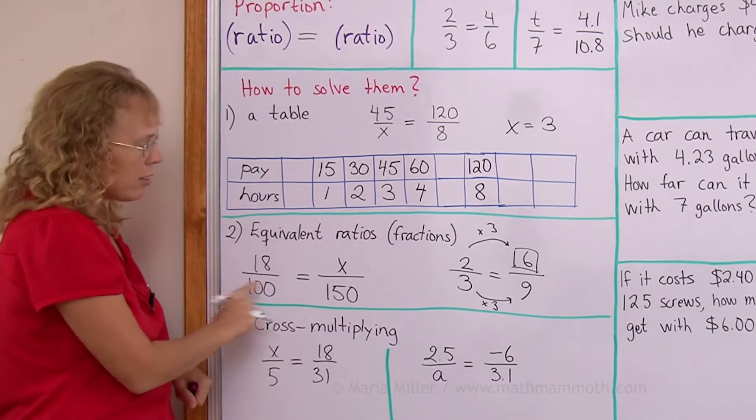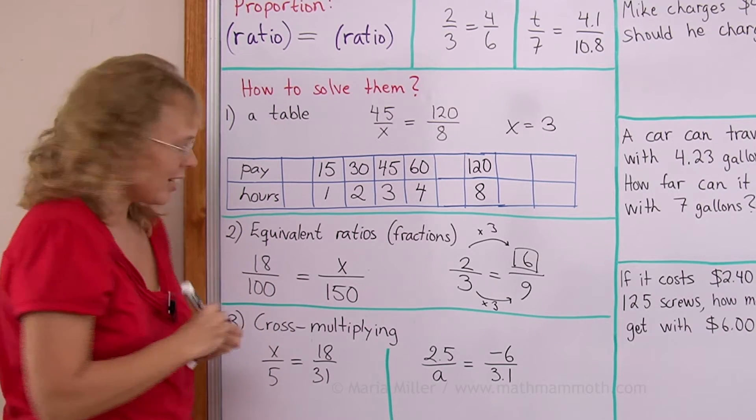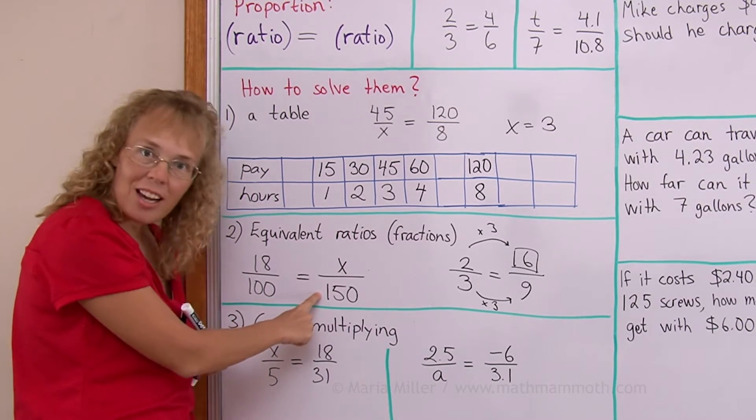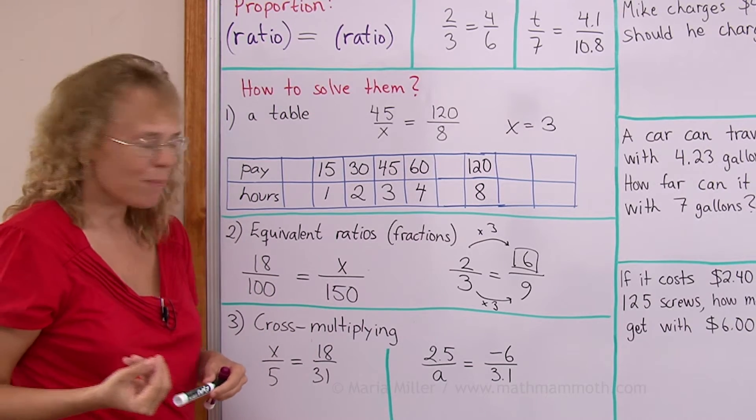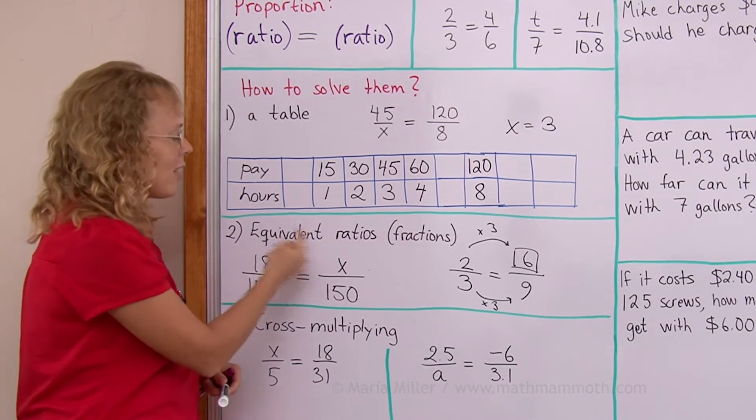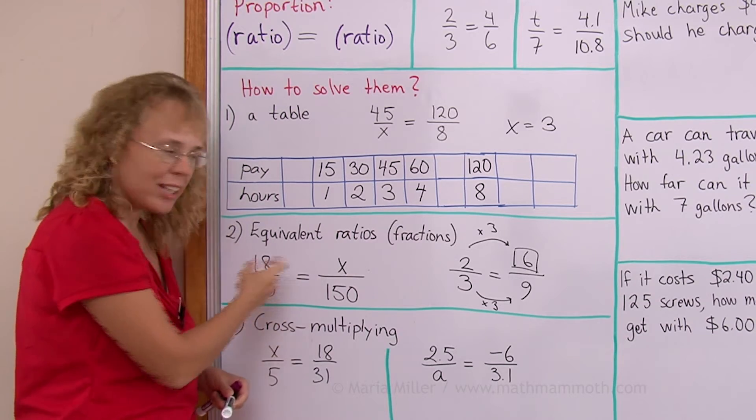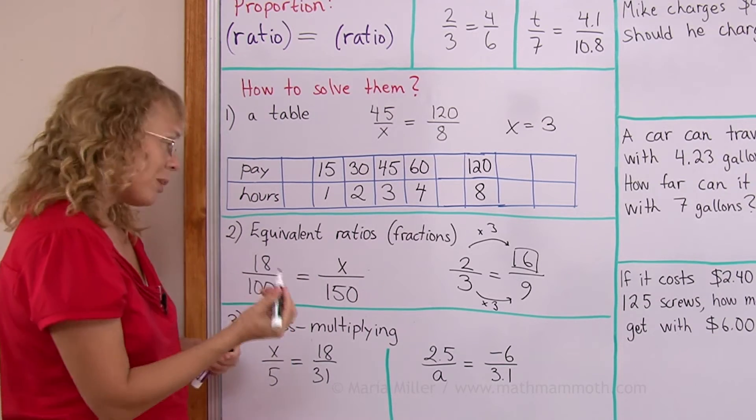So over here, I have 100 and 150. So I can see this number one and a half times is 150. So I take this number one and a half times to put here in place of x, right? And so that would be 27.